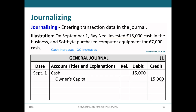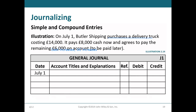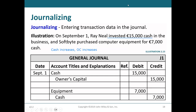The next transaction: SoftBuy purchased computer equipment for $7,000 cash. The company buys equipment, so equipment increases by $7,000. Equipment is an asset; when assets increase we debit. So we debit equipment $7,000. And because we pay cash, cash will decrease. Cash is an asset; when assets decrease we credit. So we credit cash $7,000.